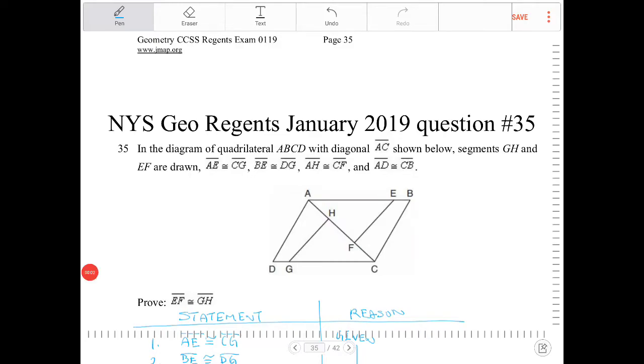In the diagram of quadrilateral ABCD with diagonal AC shown below, segments GH and EF are drawn. AE is congruent to CG, BE is congruent to DG, AH is congruent to CF, and AD is congruent to CB. Prove segment EF is congruent to GH.